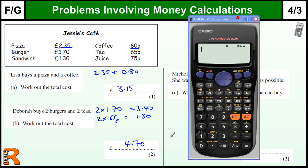Or you can do the whole thing in one calculation on the calculator: two times £1.70 plus two times £0.65. The only important thing is you must have it in pounds if you're doing a calculation when you're mixing it together.